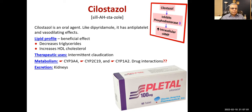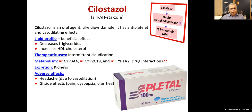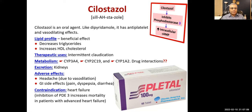Excretion is via kidneys. Adverse effects are headache due to vasodilation, and GI side effects including pain, dyspepsia, or diarrhea. Contraindication is heart failure — inhibition of PDE increases mortality in patients with advanced heart failure.